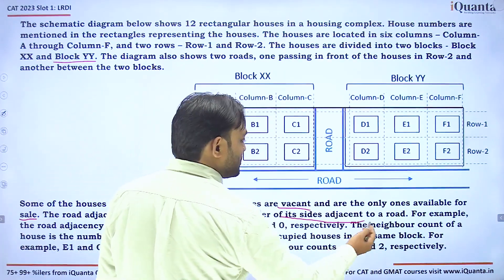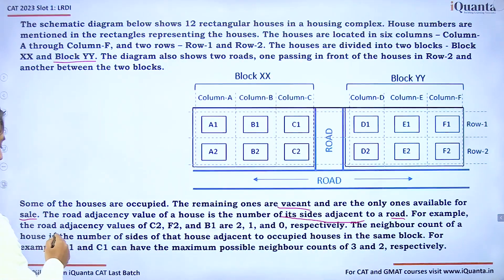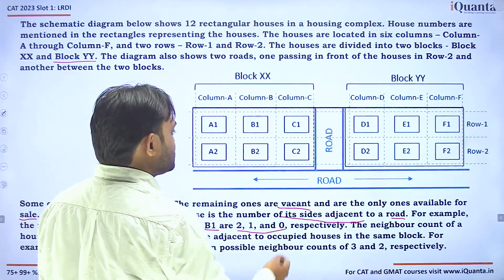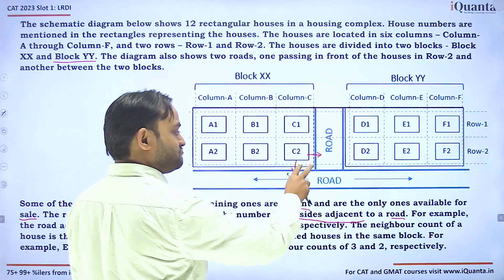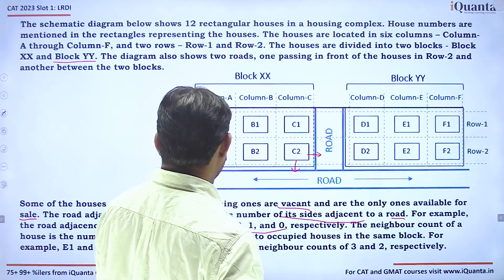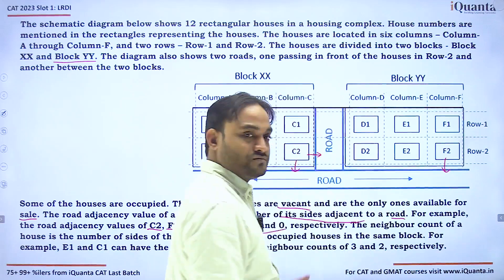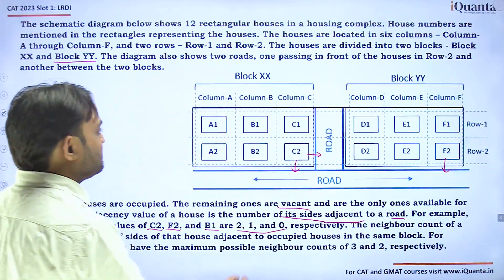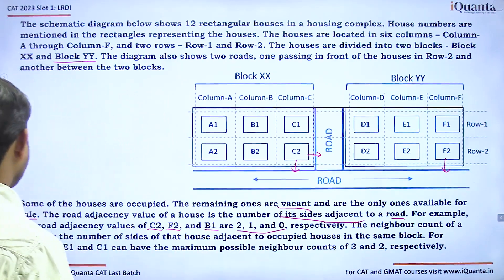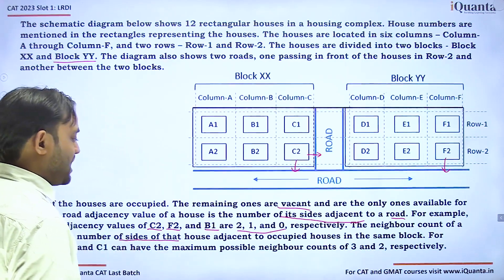The road adjacency value of a house is the number of its sides adjacent to a road. For example, the road adjacency values of C2, F2, and B1 are 2, 1, and 0 respectively. C2 is adjacent to two roads, F2 has only one adjacent road, and B1 has no road adjacent to it.